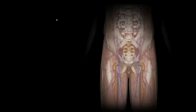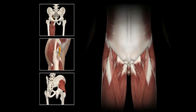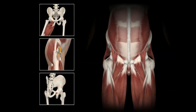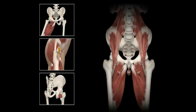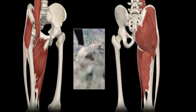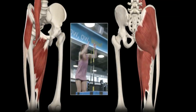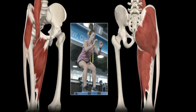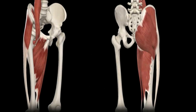This video will comprehensively address the muscles that cross over the hip joint, including their origin, insertion, innervation, and function. In total, there are 17 muscles that cross the hip joint. These muscles contribute to the hip's overall stability, functional range of motion, gait, and balance. The muscles can be separated into three groups: iliopsoas muscles, gluteal muscles, and adductor muscles.